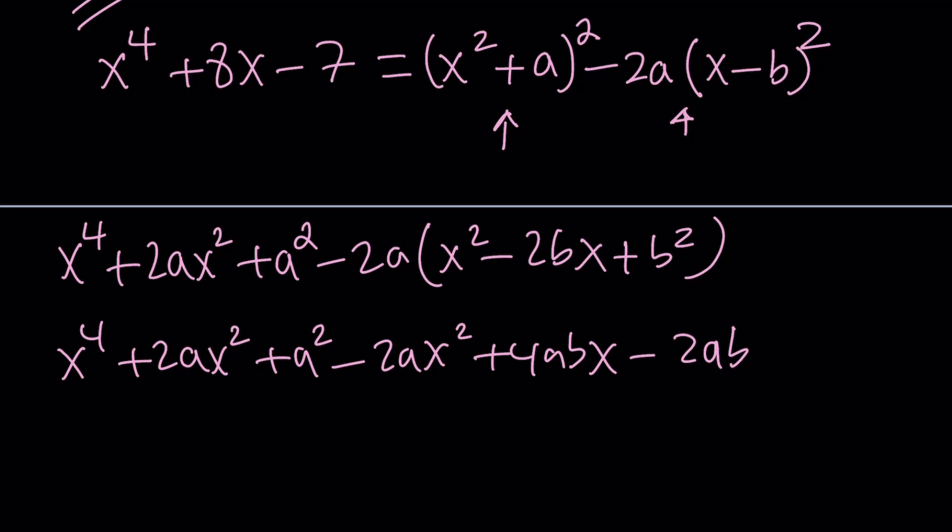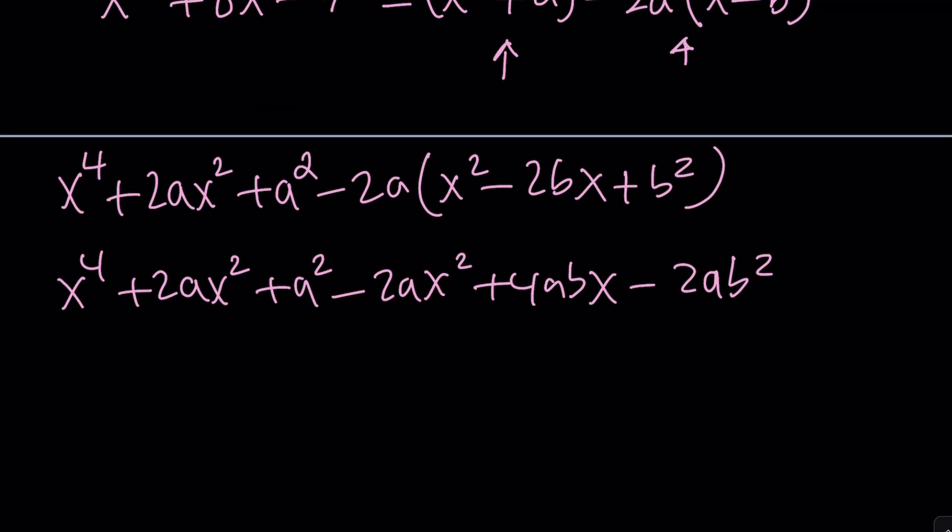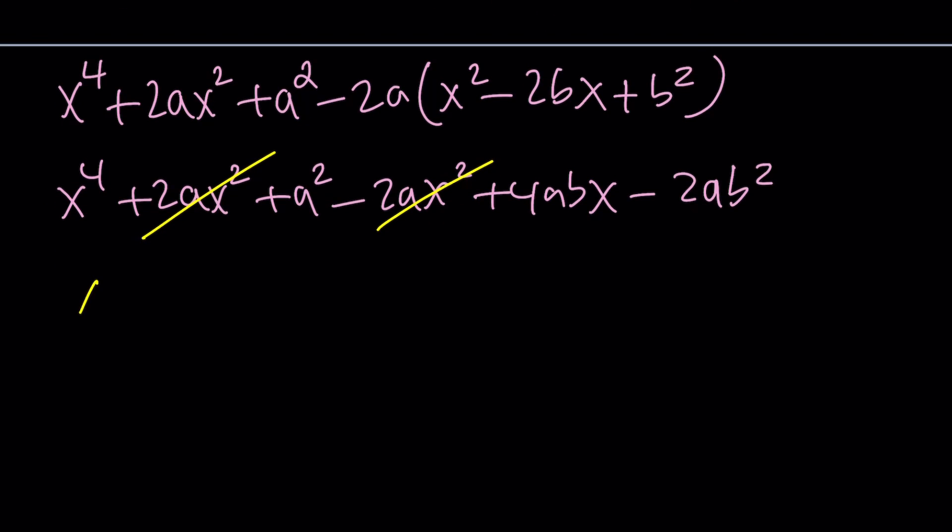Notice that the 2ax squared is going to cancel out. That was actually the goal. So we can cancel them out and then write this as x to the fourth power. There's only one term with x, which is 4abx. And then we have these two constants, a squared and minus 2ab squared. This is supposed to equal x to the fourth power plus 8x minus 7.